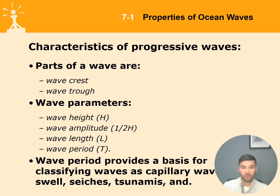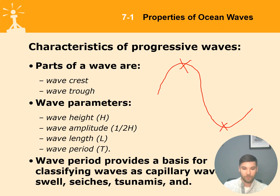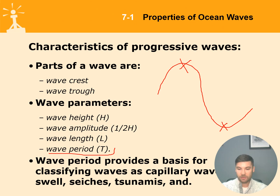Every wave has two most important parts: the crest, defined as the highest point, and the trough, the lowest point. Every wave also has four key parameters: wave height, wave amplitude, wavelength, and wave period. The period is especially useful for classifying different waves — it helps us understand whether we're looking at a tsunami or just chop.